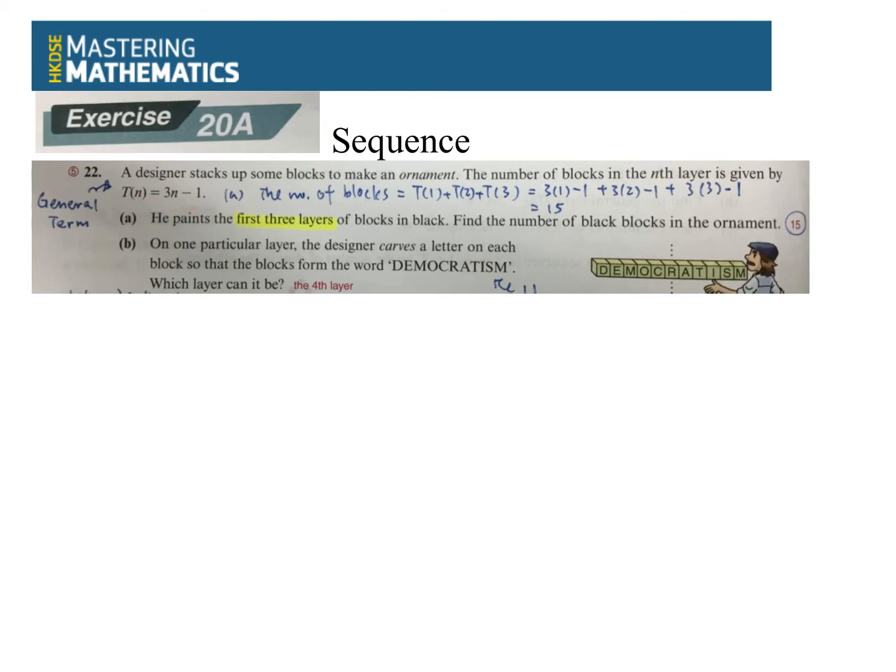Part A: He paints the first three layers of blocks in black. Find the number of black blocks in the ornament. First three layers, 即是有三個 term, 所以就T(1), T(2), T(3). 這些很快計到15, 不說了. 好, 看看B.